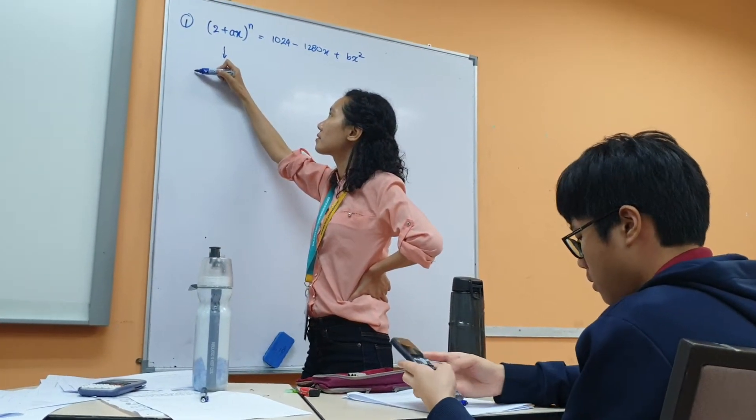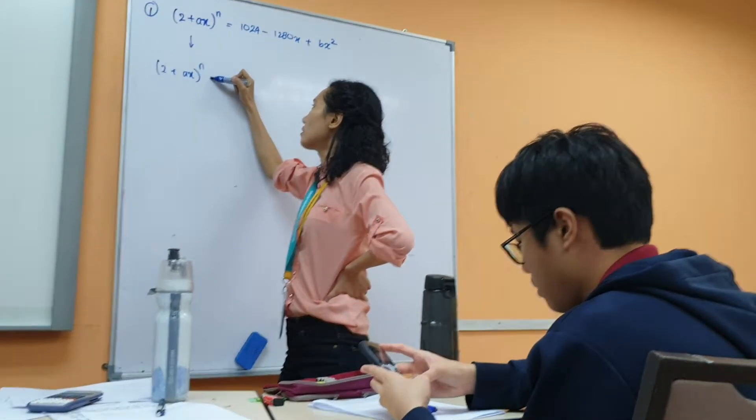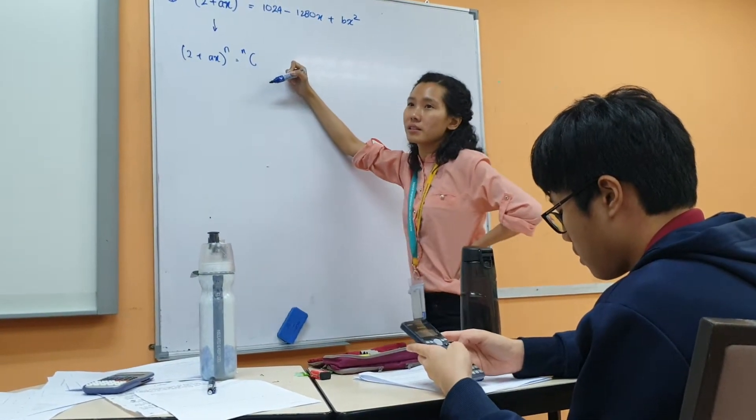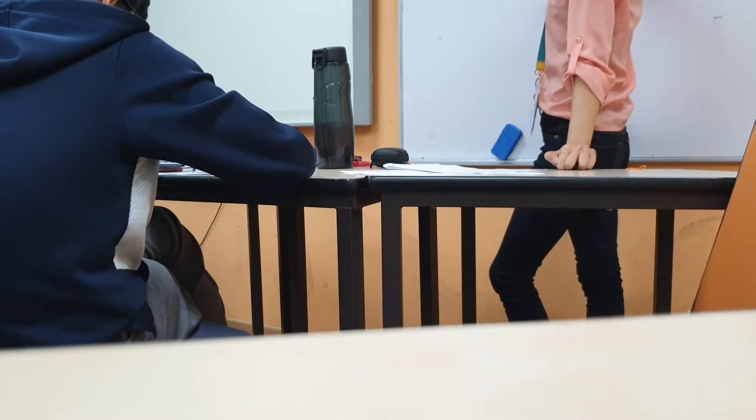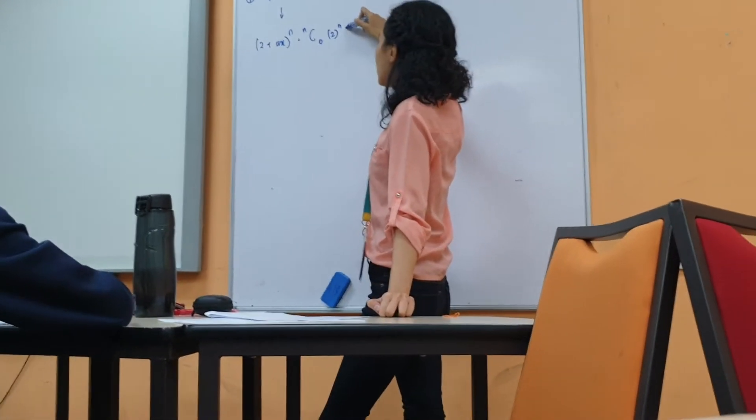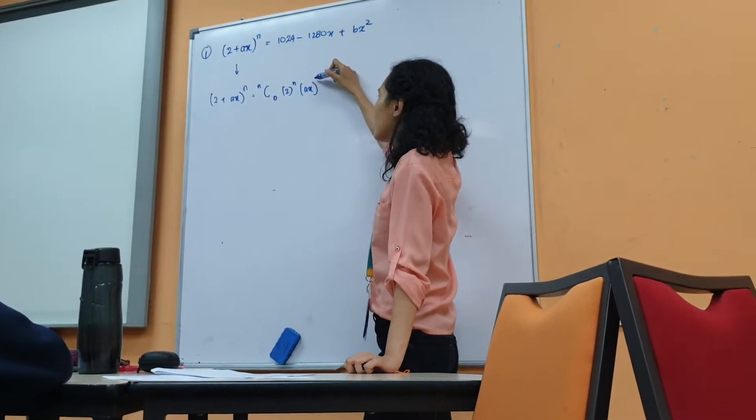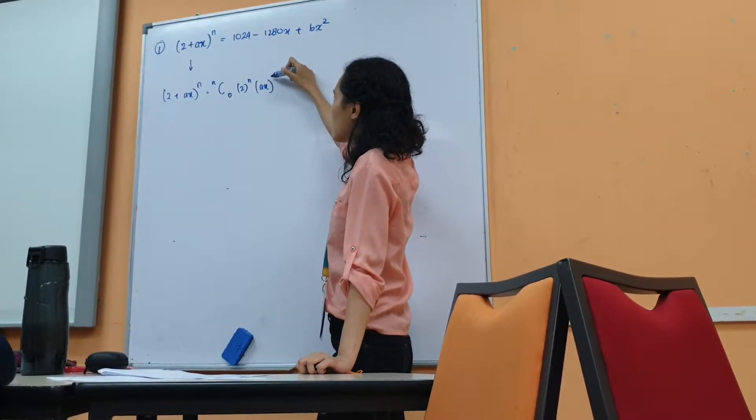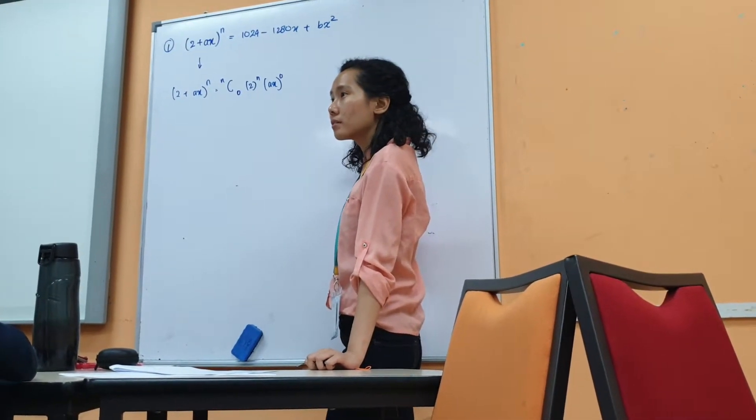So at first was N C 0 to the power of N times A times X to the power of 0. Everybody okay? Remember this formula or not?